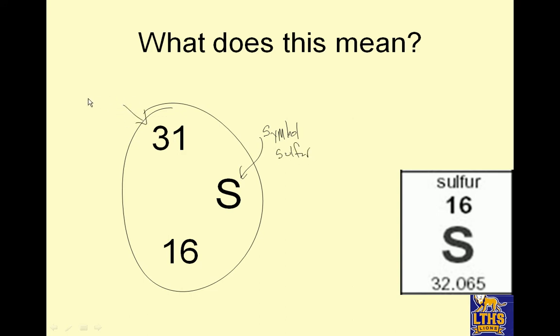This right here is the mass of this isotope, it's just one of them. This is the number of protons, which is strongly correlated to this. So notice sulfur will always have that number right here. Notice this 32.065 on your periodic table is not here, 31. This is the average mass.